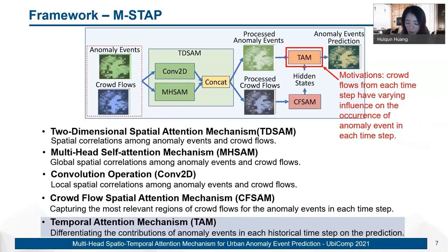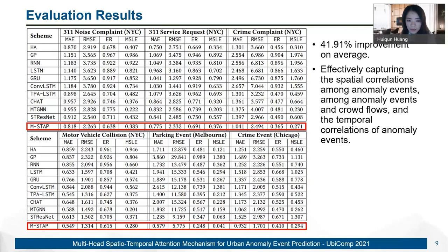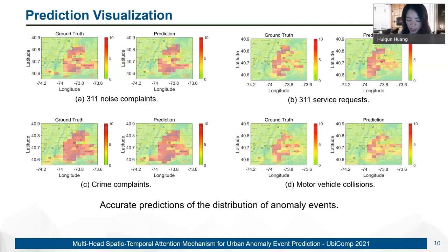The details of the experimental settings and the evaluation metrics are listed on the screen. This table shows the experimental results of our proposed model and all the baselines. We further illustrate the ground-truth and predicted heat map of the anomaly events in the CBD of one selected time step in the testing data. We can observe from the heat map that the spatial distributions and the frequencies of each anomaly event are accurately predicted by AMSA.